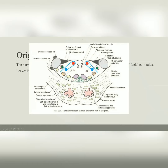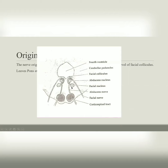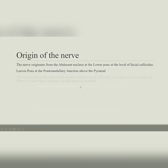Now we'll see a diagram of the lower section of the pons — you'll encounter this again when studying the internal structure of the pons. In this section, the fourth ventricle is visible. At the floor of the fourth ventricle, you can see two bulgings called the facial colliculus, which is formed by the eccentric course of facial nerve fibers looping over the abducens nucleus before exiting the pons. The nucleus of the abducens nerve thus lies at the floor of the fourth ventricle.